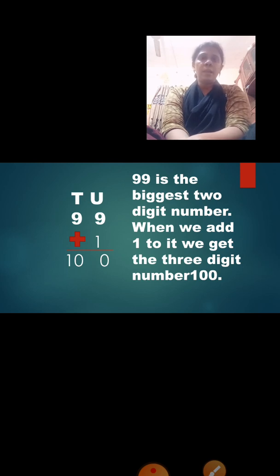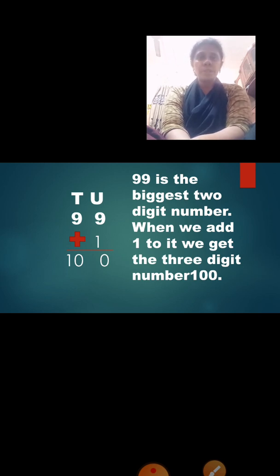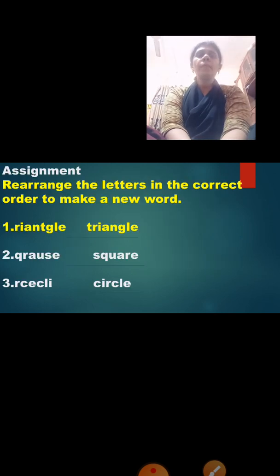Now, 99. If we add 99 plus 1, how much will it become? 99 is the biggest 2-digit number, and 10 is the smallest 2-digit number. When we add 1 to 99, what do we get? We get the 3-digit number — that is number 100. With this, we finish this session of number work part 1.